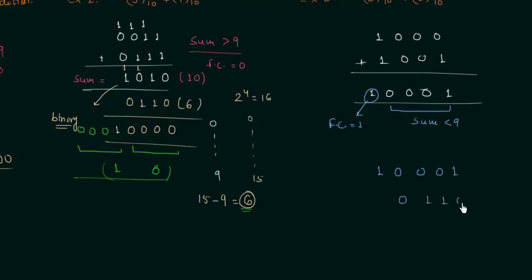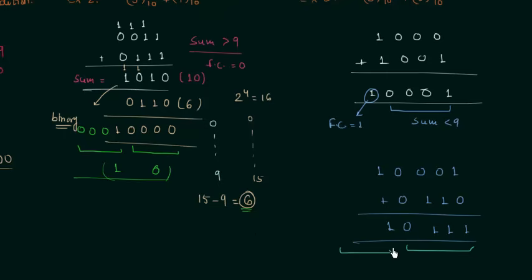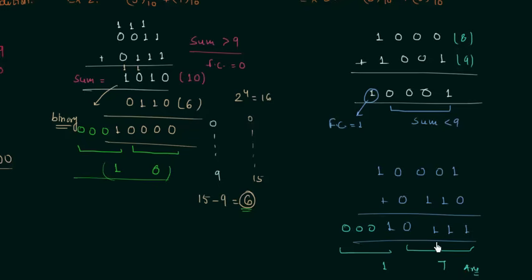After adding 6 (0110), we perform the binary addition and get 10001 as the result. We make groups of 4 bits: the first group gives us 7 and the second group gives us 1, so 17 is the answer. We can cross-check: 8 plus 9 is 17, and we have 17 as our answer. So by adding 6 we have the correct answer.